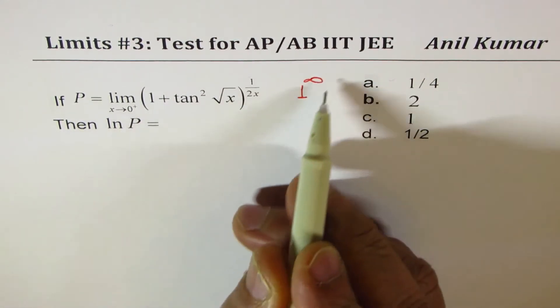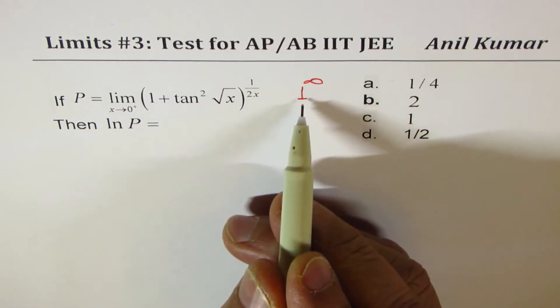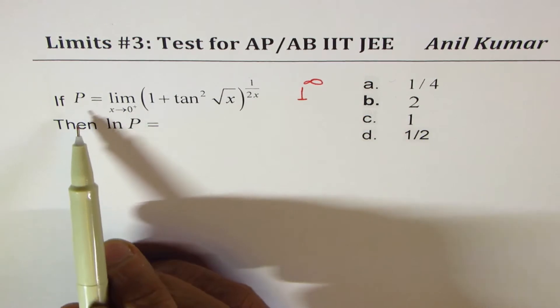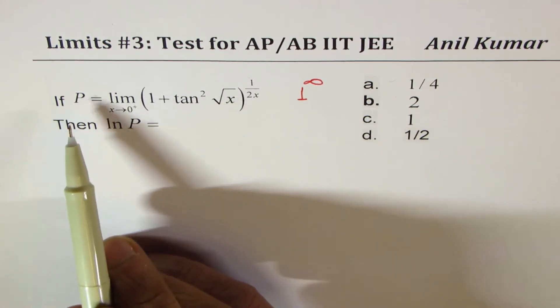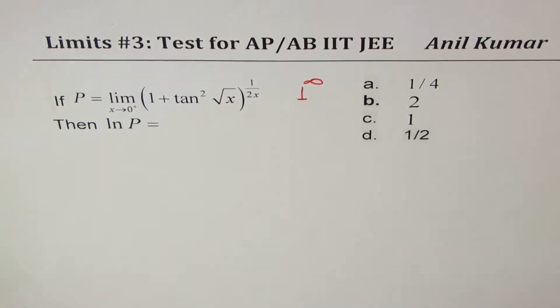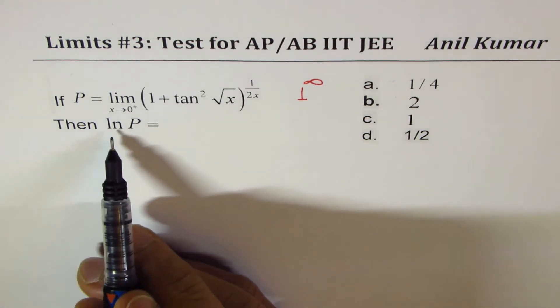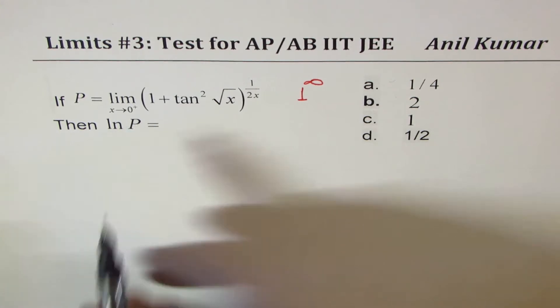So whenever we have this indeterminate form of 1^∞, the idea is to take logarithms both sides and then find the limit. Fortunately for us, we have to find an expression with natural log of P.